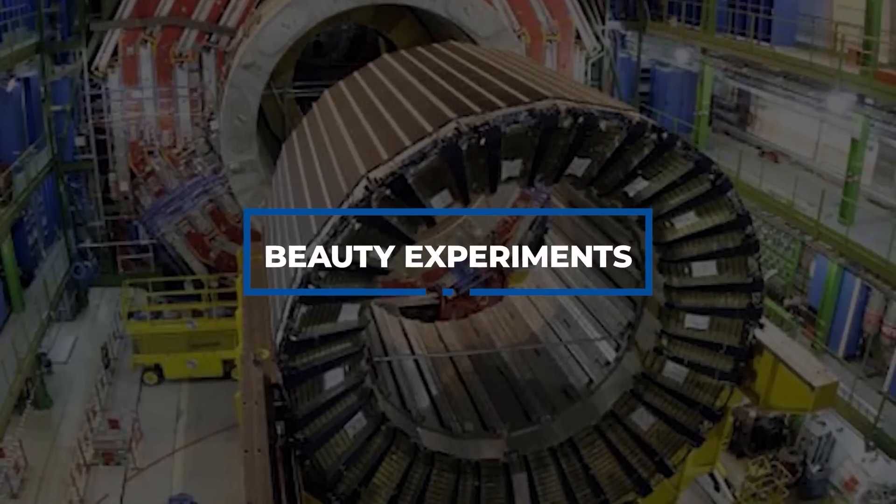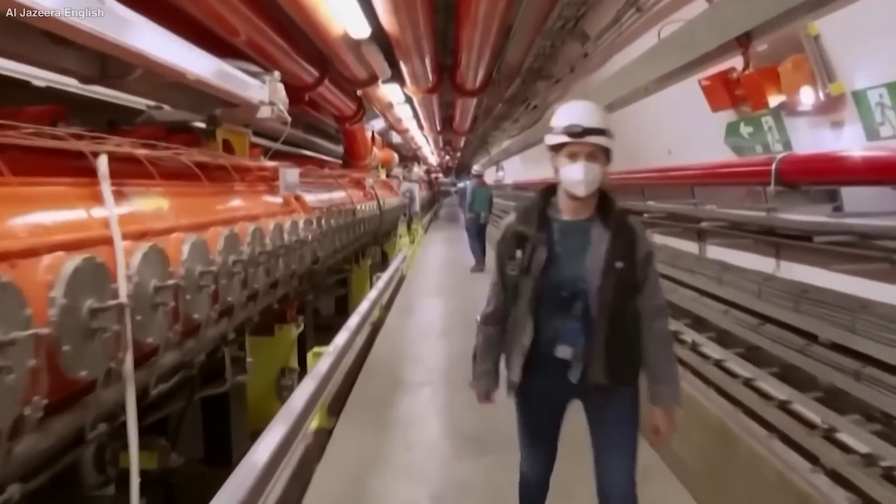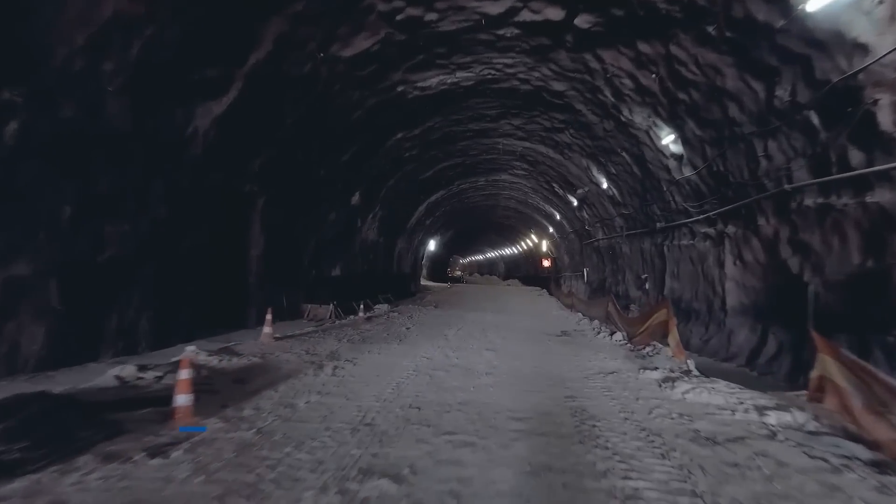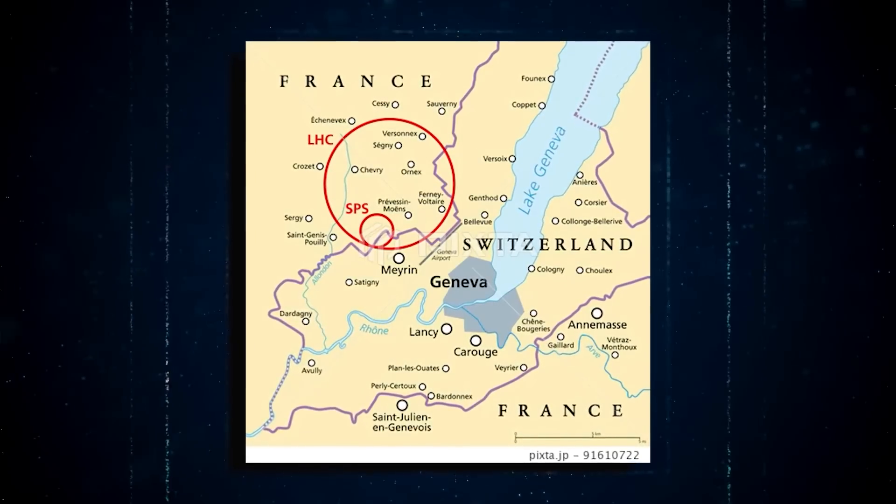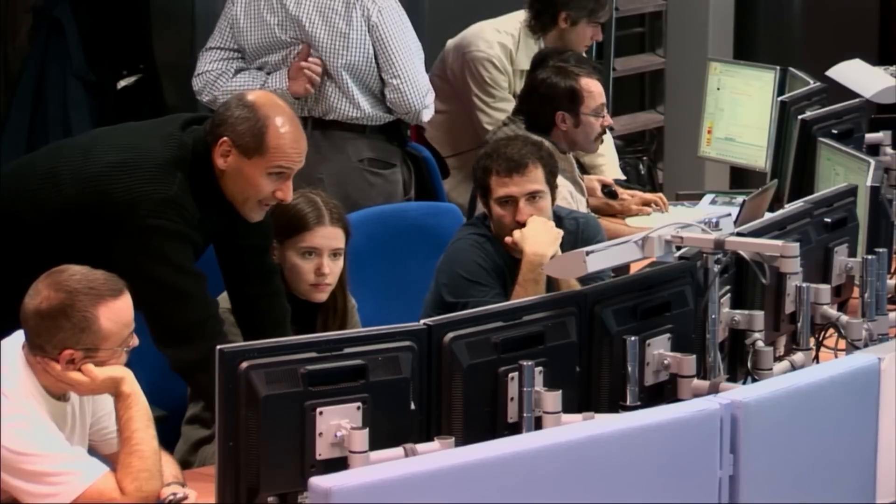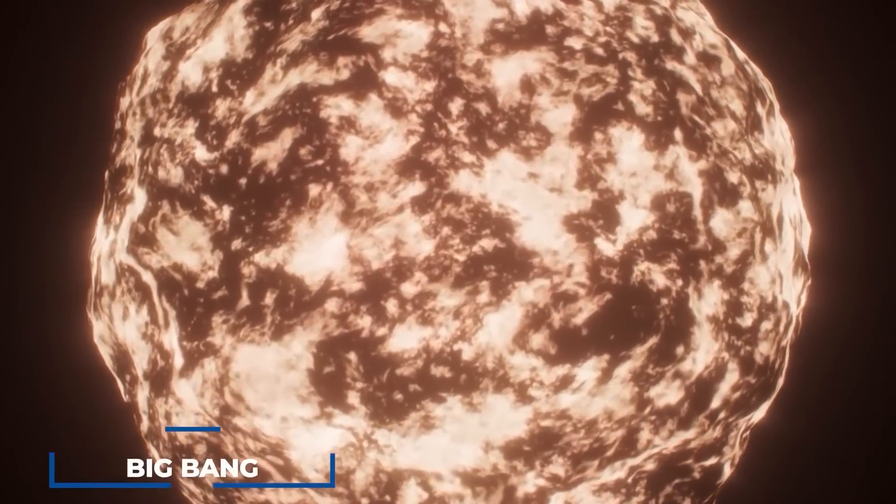Beauty Experiments. The Large Hadron Collider located at CERN stands as the most powerful particle accelerator in the world. Constructed as a circular tunnel spanning 17 miles beneath the border of France and Switzerland near Geneva, it propels subatomic particles at nearly the speed of light. This remarkable facility allows physicists to recreate the extreme conditions that existed mere moments after the occurrence of the Big Bang.